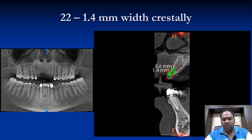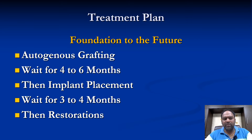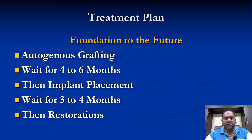The treatment plan given for him was 'the foundation to the future': autogenous grafting would be done first, then wait 4 to 6 months, then implant placement, then wait 3 to 4 months, and then restorations would be given to him.